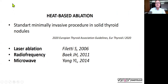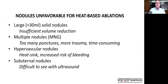As the previous speaker has already mentioned, heat-based ablations are the standard minimally invasive procedure in solid thyroid nodules. However, there are a number of nodule types that are not very favorable for heat-based ablations, such as large nodules, especially with more than 30 milliliters volume. In such nodules, the volume reduction with RFA is generally not sufficient. Or multiple nodules, mainly a multinodular goiter, that requires too many punctures and induces more trauma to the thyroid.